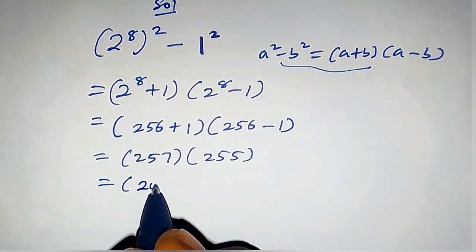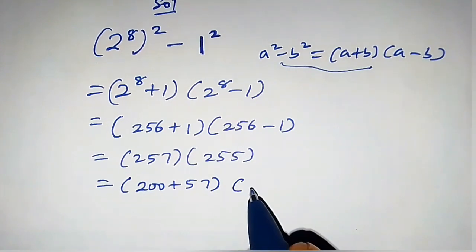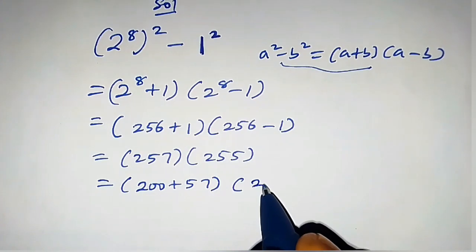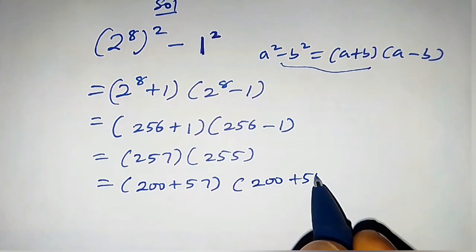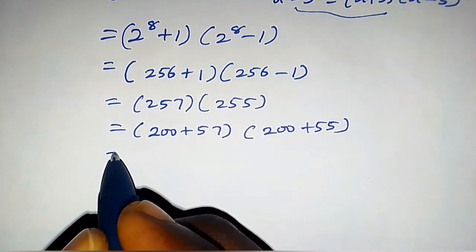Which equals 257, which can be written as 200 plus 57, times 255, which also can be written as 200 plus 55. Now, let's open this bracket.